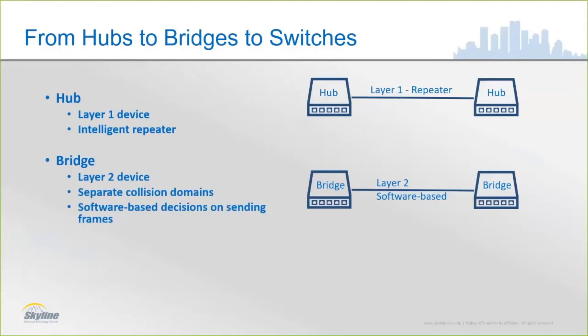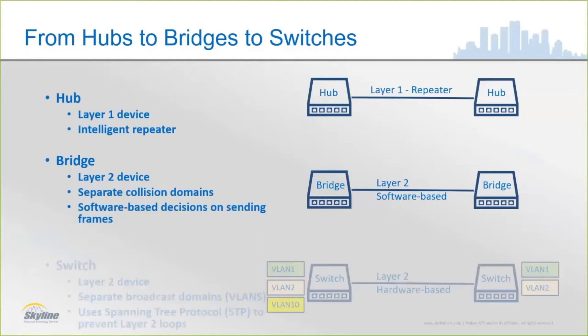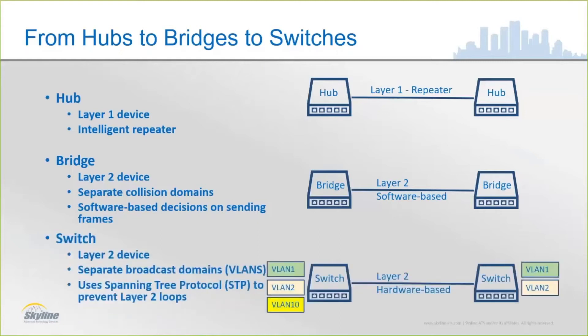A bridge is a layer two device that has some measure of intelligence. It separated collision domains — a collision domain being a place where collisions have a high likelihood of occurrence. Bridges still worked alongside hubs, connecting them together, and made forwarding decisions based on which side of the bridge a device lived on, using software to make those decisions.